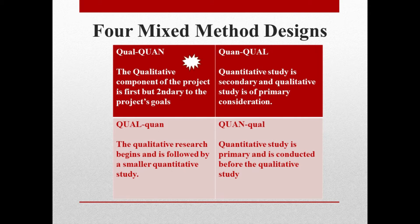First is qualitative quantitative. The qualitative component of the project is first, but secondary to the project's goals. Next is quantitative qualitative. Quantitative study is secondary and qualitative study is a primary consideration. Next, qualitative research begins and is followed by a smaller quantitative study. Finally, quantitative study is primary and is conducted before the qualitative study.